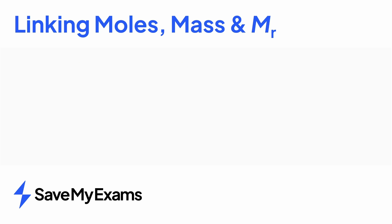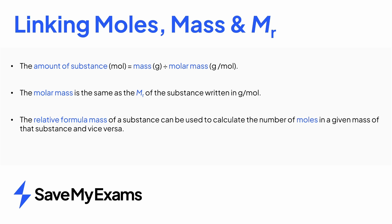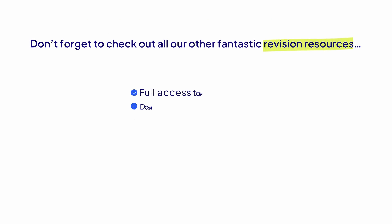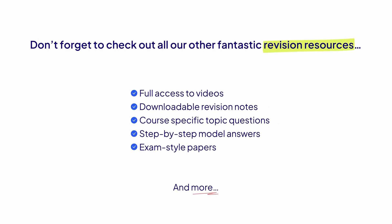In summary, the amount of substance in moles is equal to the mass of the substance divided by its molar mass. The molar mass is found by calculating the relative formula mass of the substance. This can then be used to calculate the number of moles in a given mass of a substance, and vice versa. Don't forget to check out all our other fantastic revision resources here at Save My Exams.